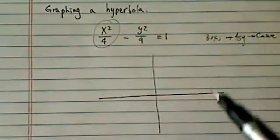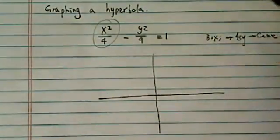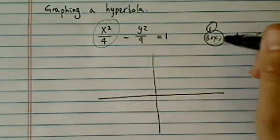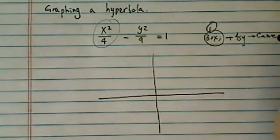So the curve, first thing, there are a couple key things you need to know. Number one, we're looking for a box because the box gives us the asymptotes, asymptotes give us the curve.